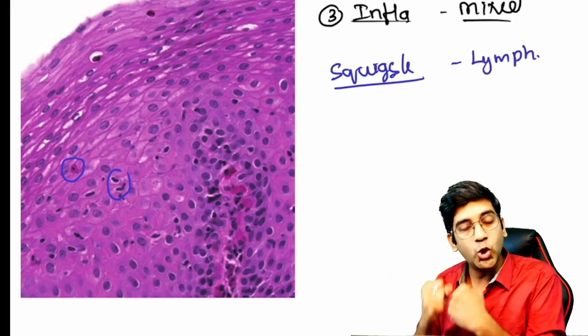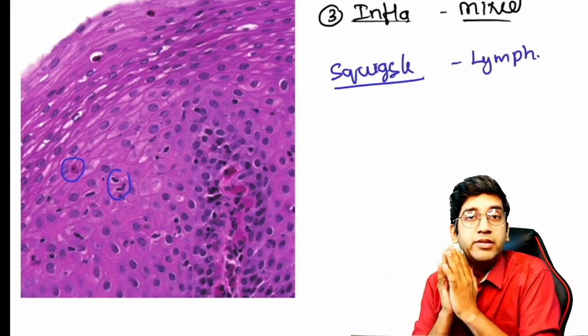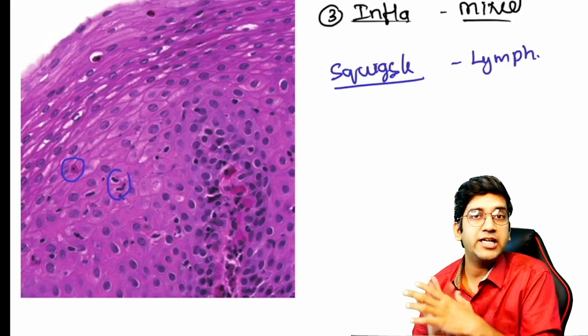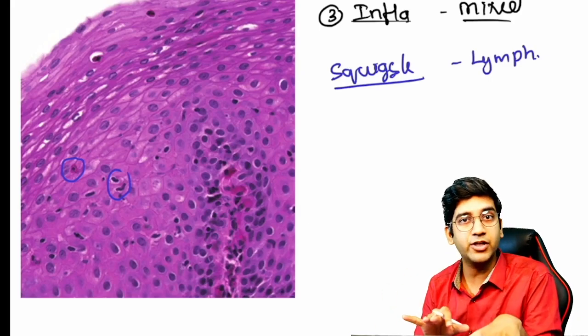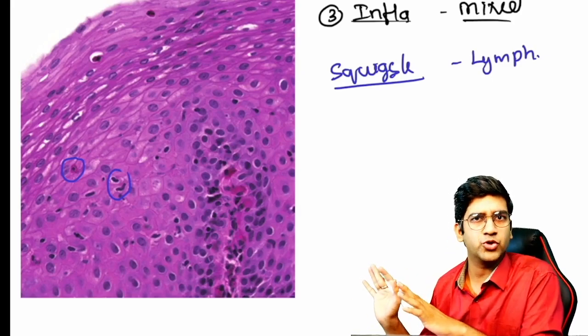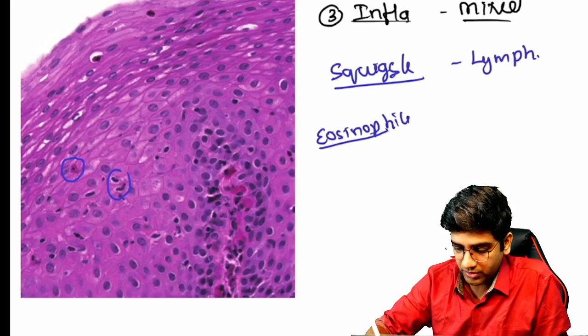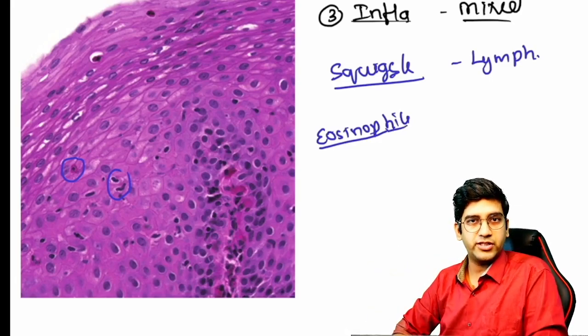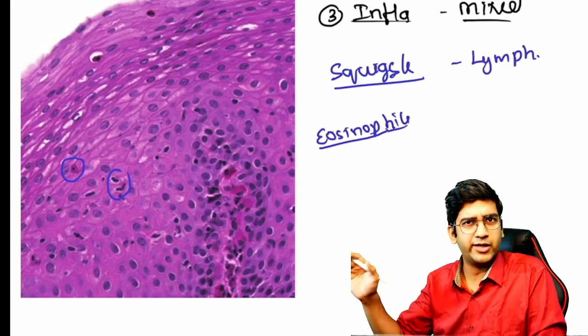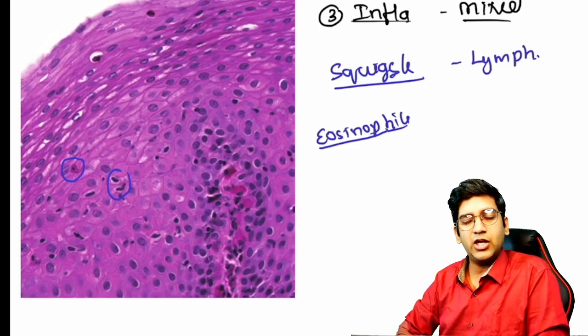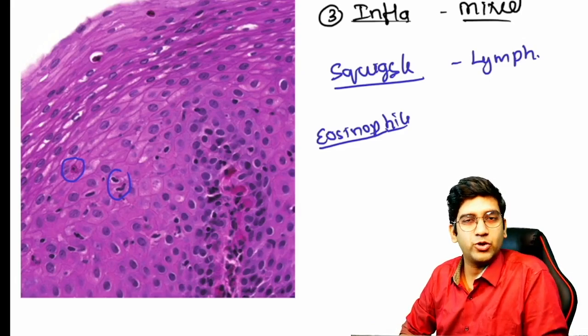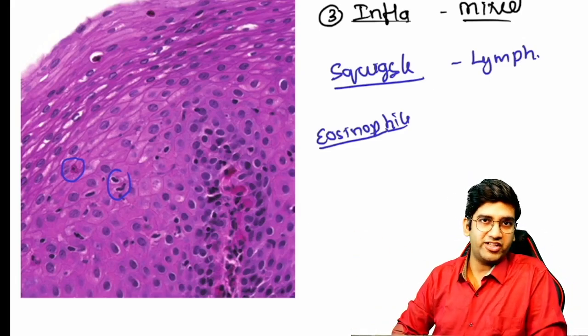Like I said, you can see eosinophils as well. Even this biopsy, it's always a mixed inflammatory infiltrate. Please don't keep in mind that GERD should have acute inflammation. You might have acute, you might have mixed, you might have eosinophils as well, because eosinophil is one of the important findings. When we go to eosinophilic esophagitis, the most important differential diagnosis in microscopy is GERD. I'll tell you how to take care of that, how to diagnose them very soon.